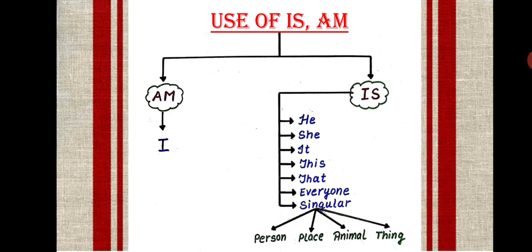Then singular place. Delhi is a big city. Then singular animal. A cat is white. Then singular thing. A ball is big. I hope this is clear.